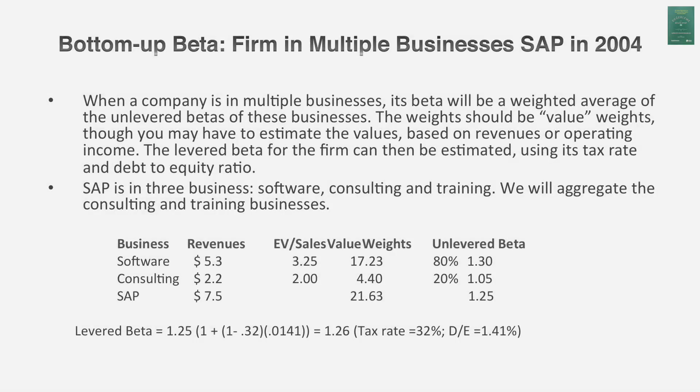It's been almost 15 years since I've done a valuation using a regression beta, and that should tell you how strongly I feel about using sector-average or bottom-up betas. So we've got a beta for a single-business company. Let's up the ante and try a more difficult case — a company in two businesses. Let's look at SAP, which is a German software company.